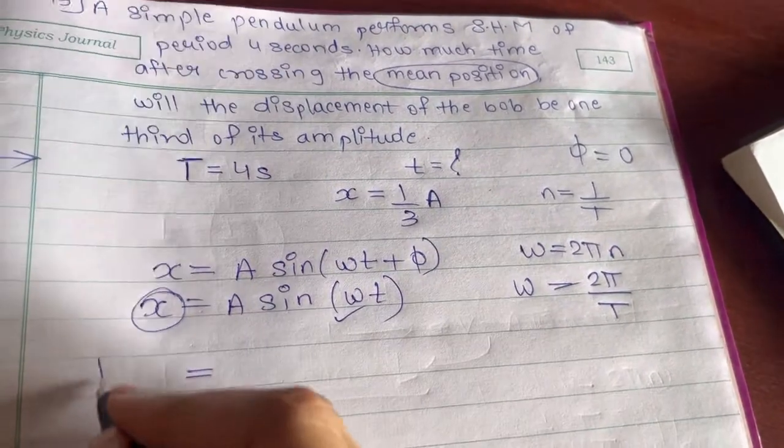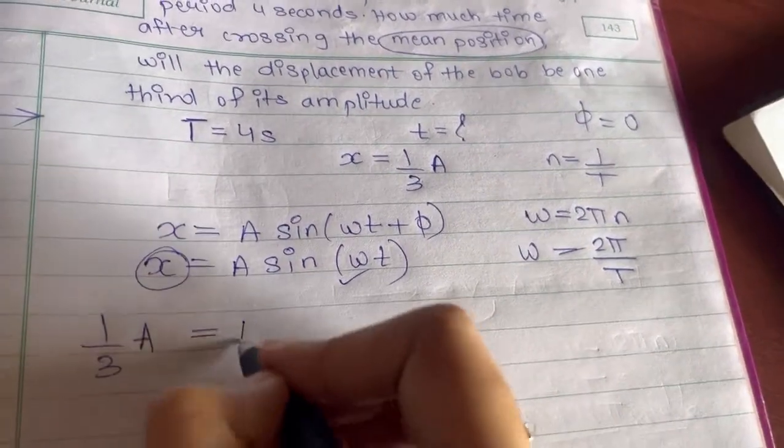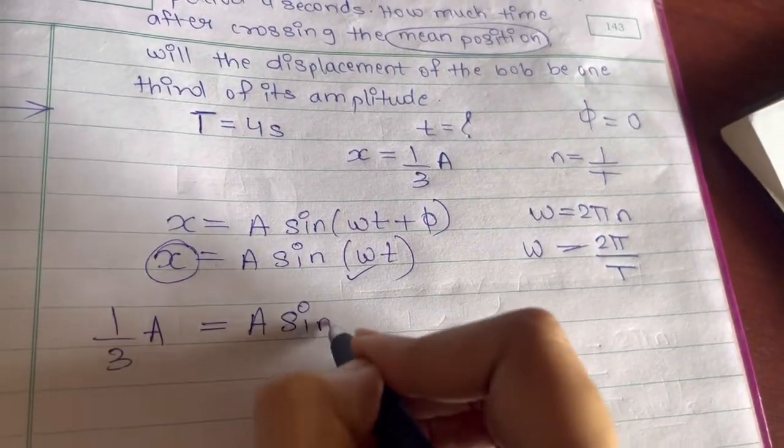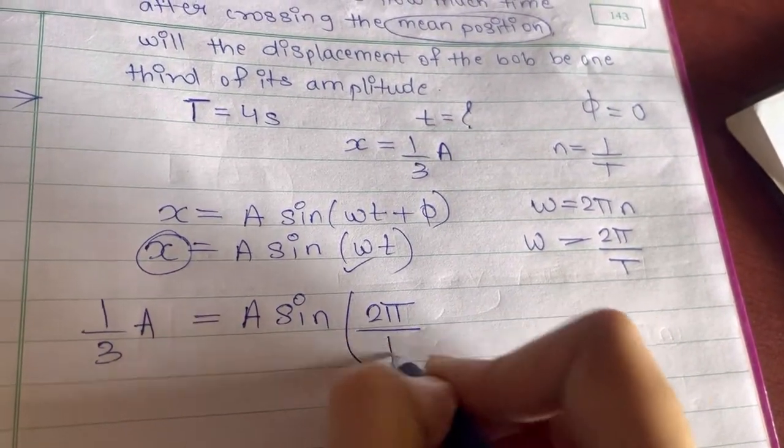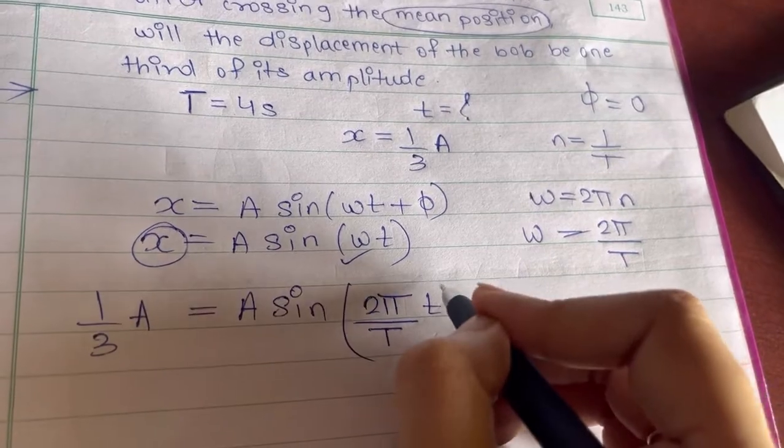What is x equal to? 1 upon 3A. Here also you have A sin, in place of omega you can write 2 pi upon capital T and this small t.